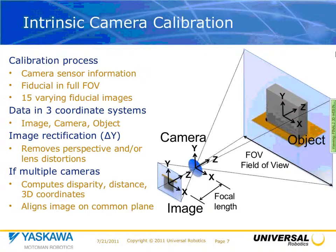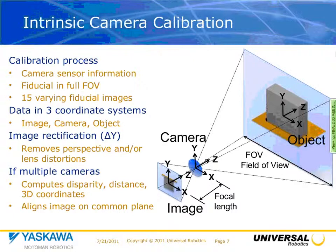Remember, you have three coordinate systems: the image, the camera lens, and the objects of interest. During calibration, the Y direction removes differences between different images — that's called image rectification — so that the Ys are aligned between different views. When you have multiple cameras, you then compute disparity and distance, and align the images on a common plane.